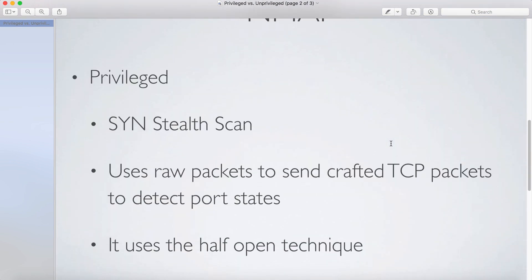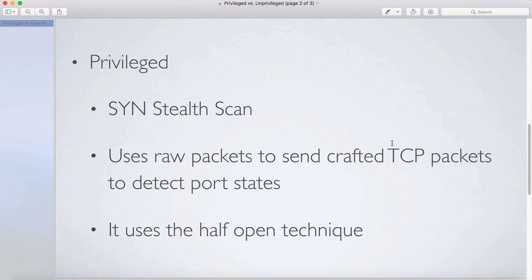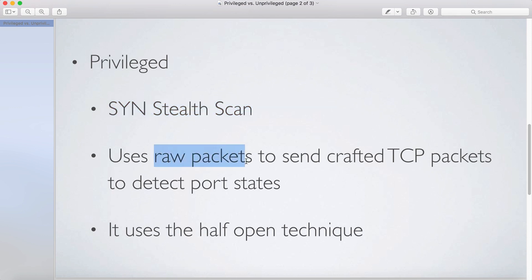Now the topic is privileged versus unprivileged scan. If you're running nmap as a privileged user — meaning as a root user with root access to the machine — by default it runs a TCP SYN stealth scan. What that means is that as a privileged user, you can create raw packets and send these crafted TCP packets to detect open ports.